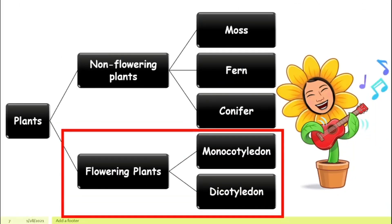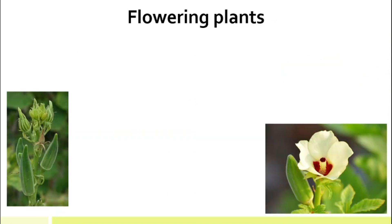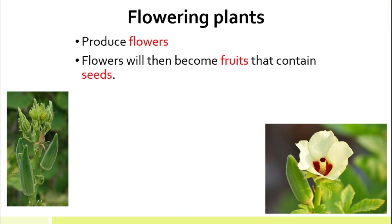Now let's look at flowering plants. Just like the name suggests, flowering plants are plants that produce flowers. Why is it important for them to produce flowers? Because these flowers will then become fruits, and inside fruits you can find seeds. For example, the okra plant — also called lady's finger — produces flowers first, and this flower turns into the lady's finger fruit, which contains seeds inside.